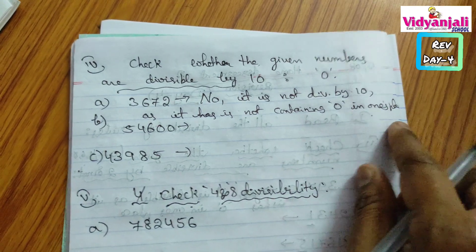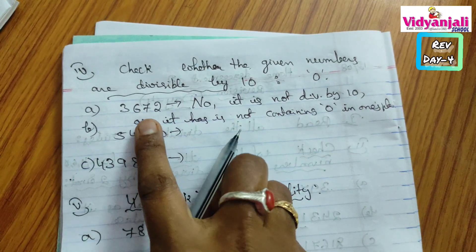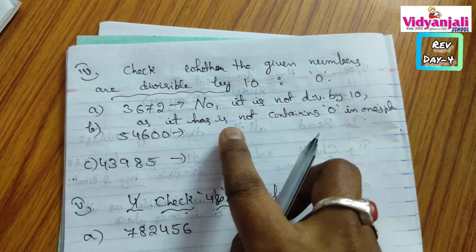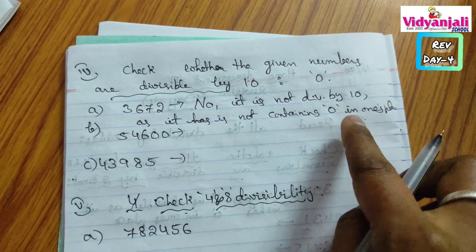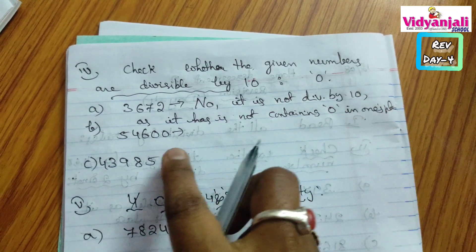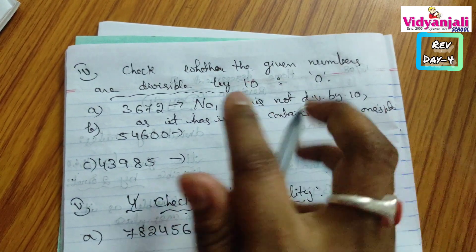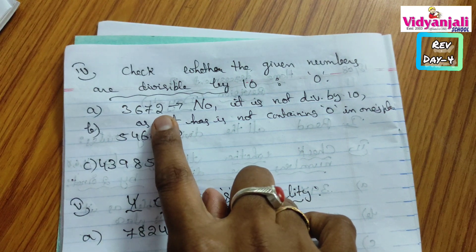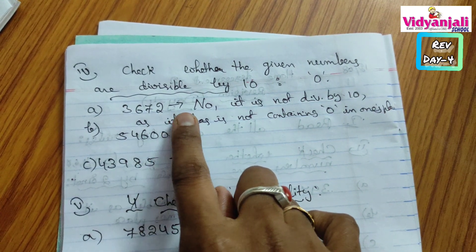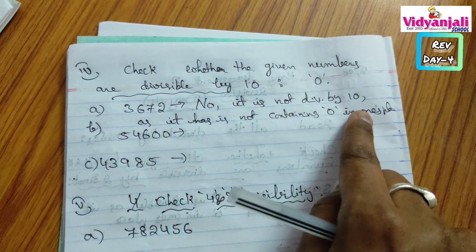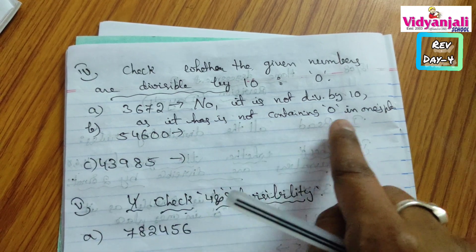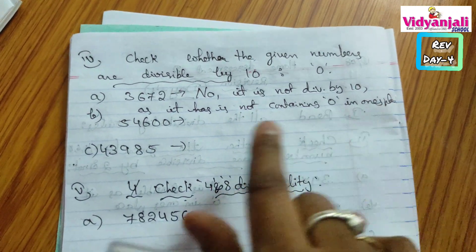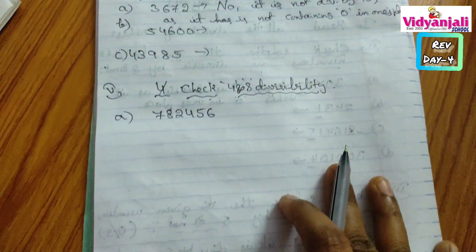I hope you understood how to give the answer. If you have 0, write: yes, it is divisible by 10 as it has 0 in the 1's place. If we don't have 0, write: no, it is not divisible by 10 as it is not containing 0 in the 1's place. Complete the remaining.